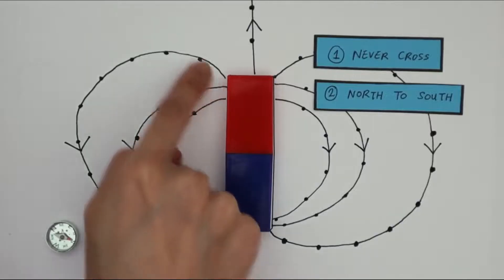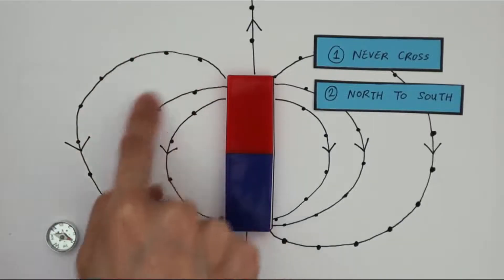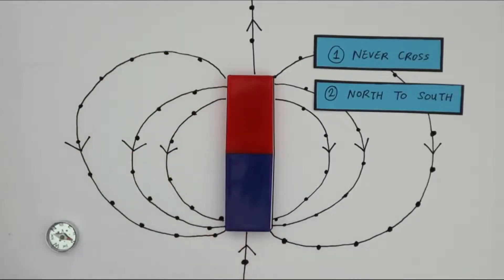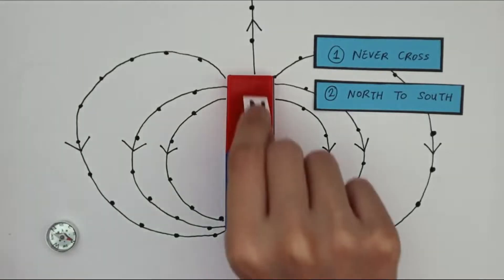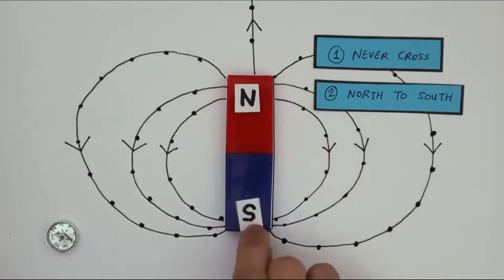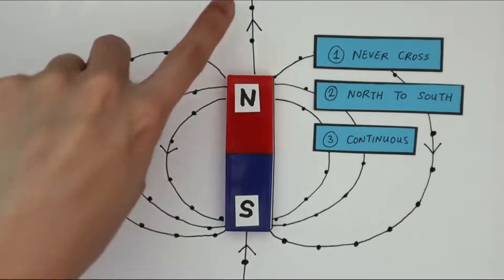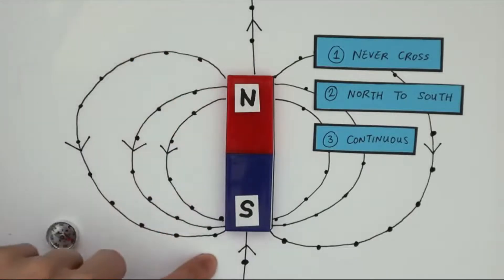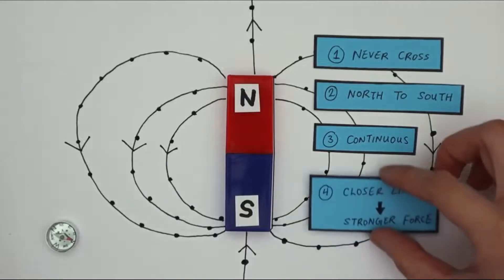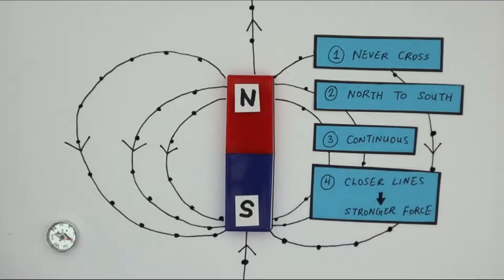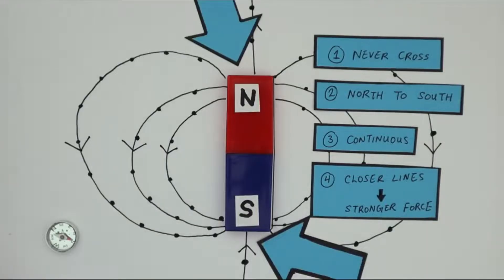Property two: magnetic field lines always point from the north pole of a magnet to its south pole — north into south. Property three: they are continuous; the only reason these lines appear cropped here is because we have run out of space. Property four: where the lines are closer together, the magnetic force is the strongest, and that is at the poles of the magnets.